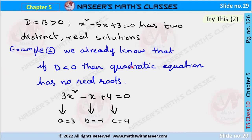For example 2, we already know that if D is less than 0, then the quadratic equation has no real roots. Here is the example: 3x² minus x plus 4 equals 0.